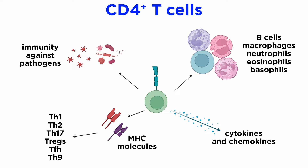These cells exist in various forms based on function and cytokine profile: T-helper 1 or Th1, T-helper 2 or Th2, T-helper 17 or Th17, regulatory T-cells or Tregs, follicular helper T-cells or TFH, and T-helper 9 or Th9.